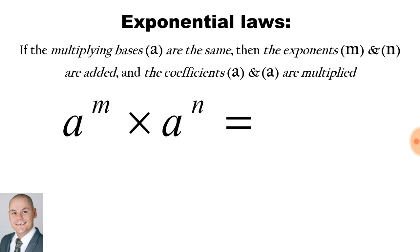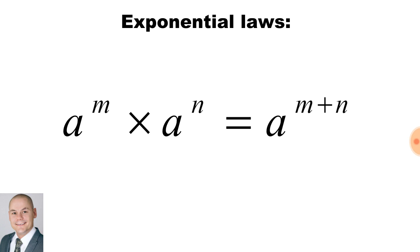In terms of exponential laws, we have a base a to the exponent of m multiplied by the base a to the exponent of n. If the multiplying bases a are the same, then the exponents m and n are added and the coefficients are multiplied. Therefore the result is the base a to the exponent of m plus n.